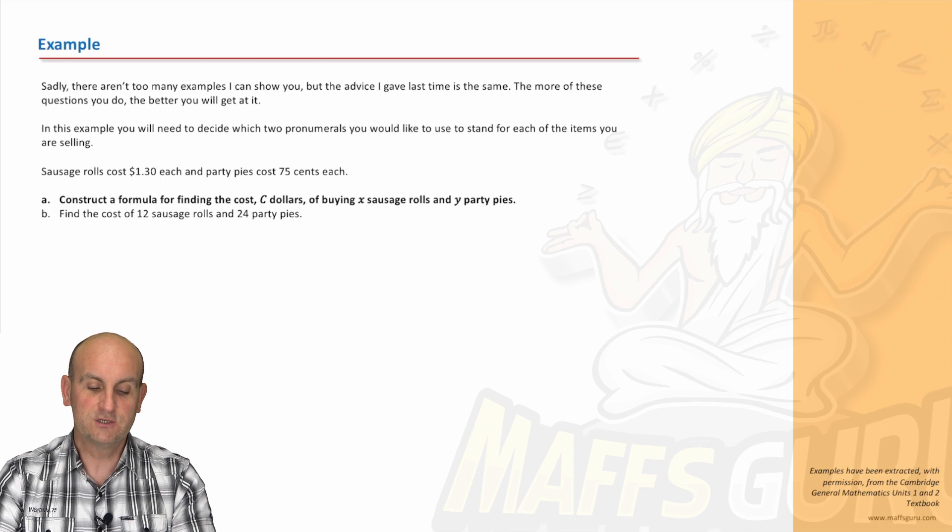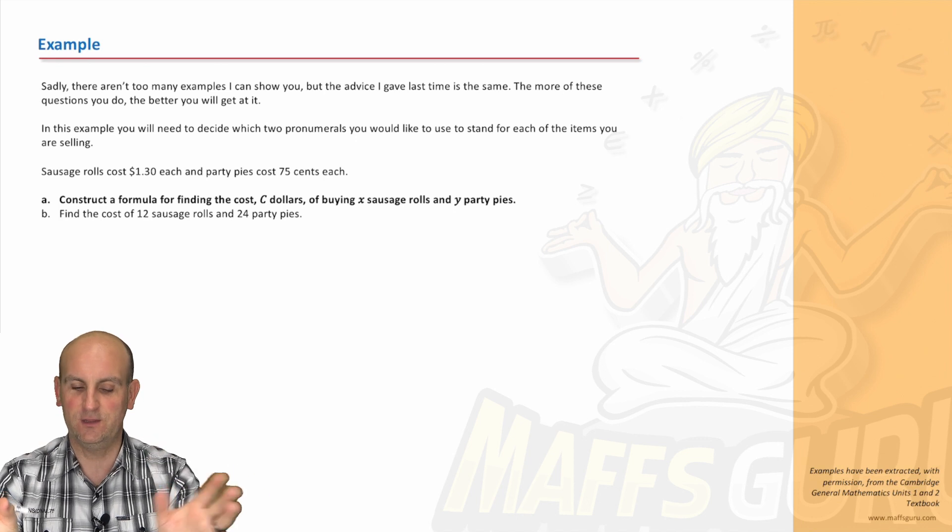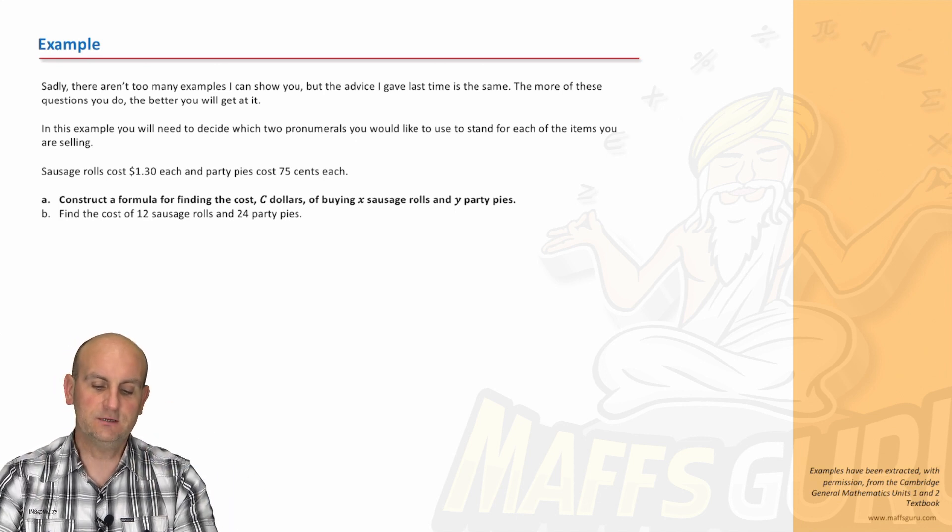Well, let's read the question. Sausage rolls cost $1.30 each, and party pies cost $0.75 each. Now, what do you notice? One's in dollars, one's in cents, trying to trick you with the units. That's okay. Construct a formula for finding the cost, C dollars, of buying X sausage rolls and Y party pies.